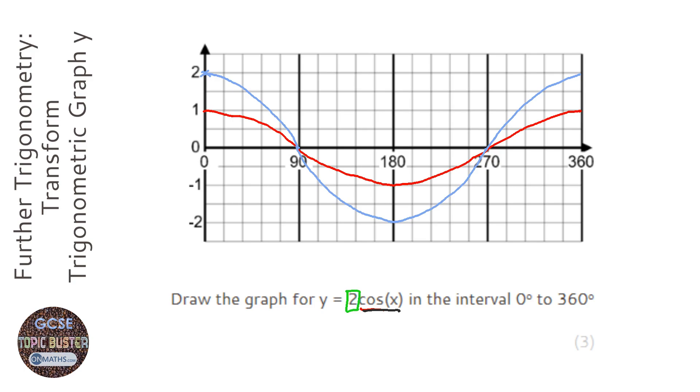It just doubles it away from the x-axis. So anything above or below the x-axis doubles.